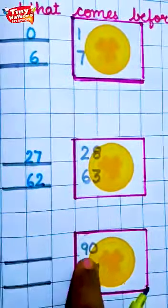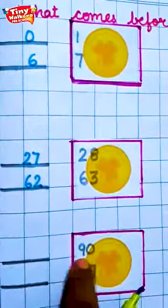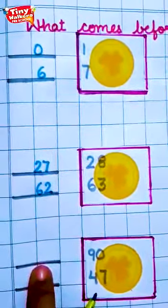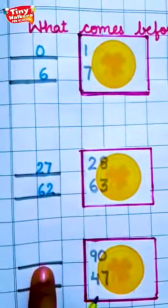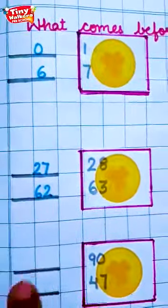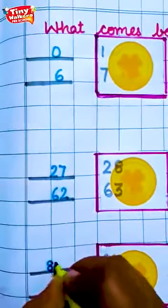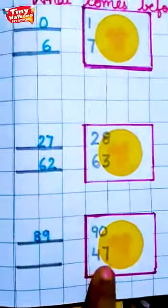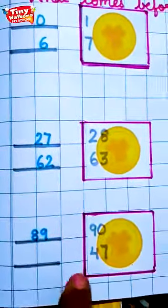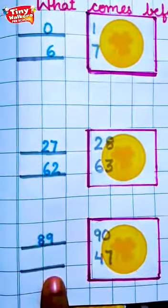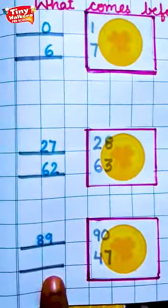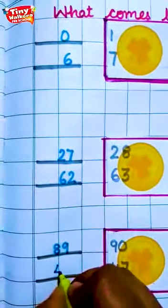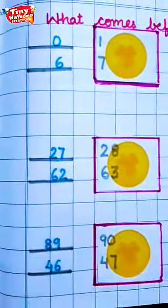90. Okay. So we will speak that line in which 90 comes. So we will say 81, 82, 83, 84, 85, 86, 87, 88, 89, 90. So what comes before 90? 89. Now look. See the last number. 47. What comes before? 41, 42, 43, 44, 45, 46, 47. So I will write 46 here.